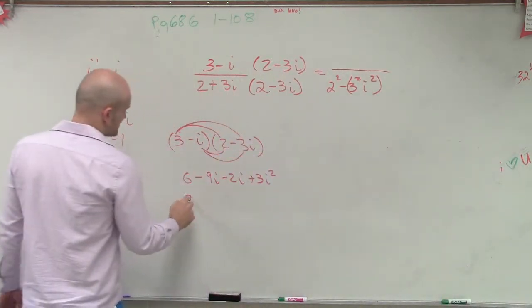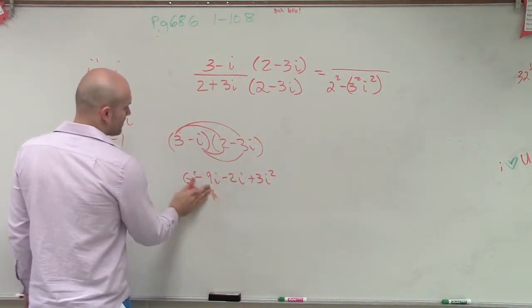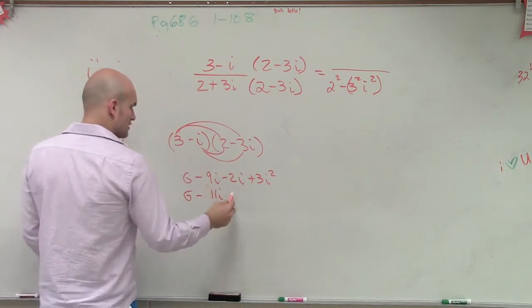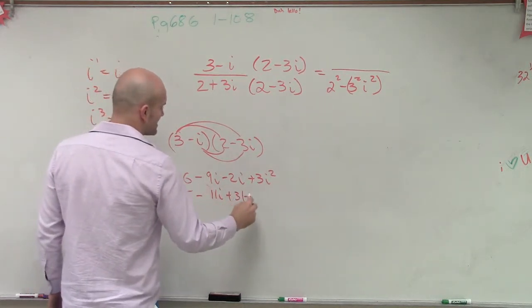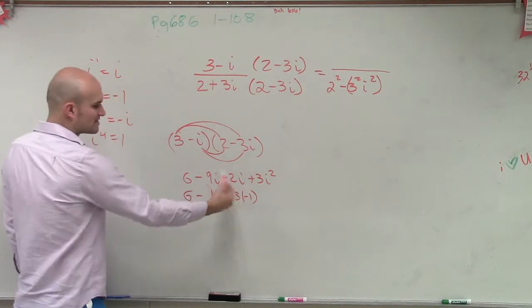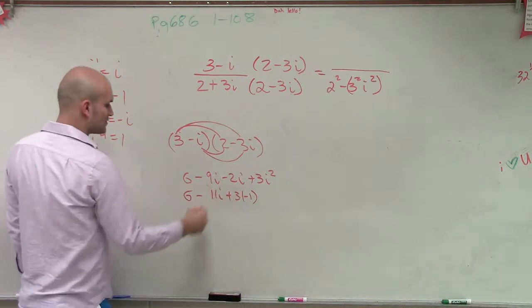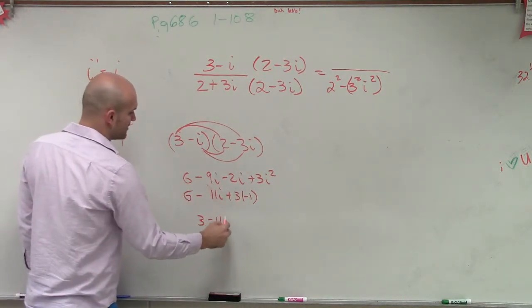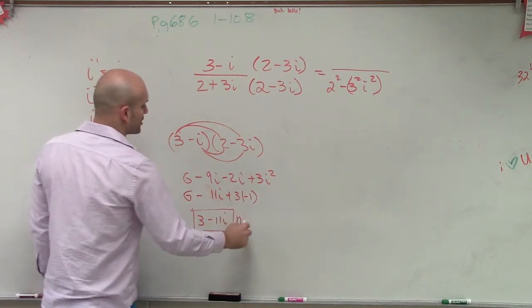So therefore, this becomes 6 minus, this would be 11i. Plus 3 times negative 1. 3 times negative 1 is minus 3. 6 minus 3 is just going to be 3 minus 11i. So that's our numerator.